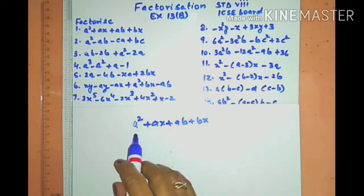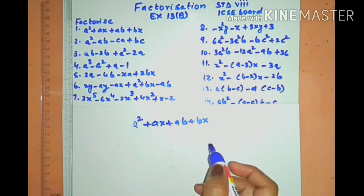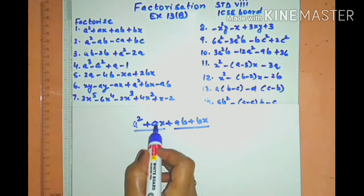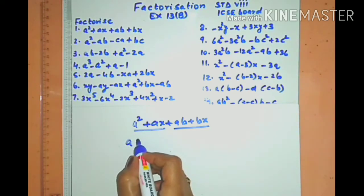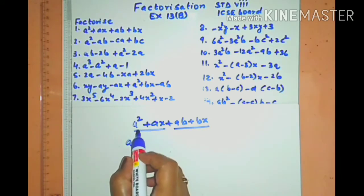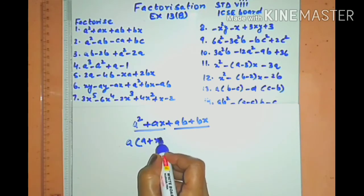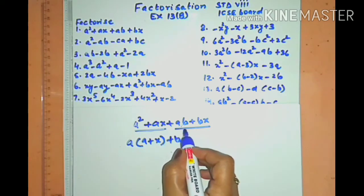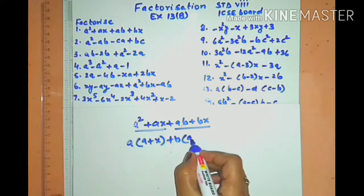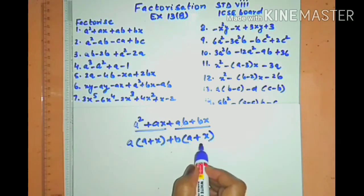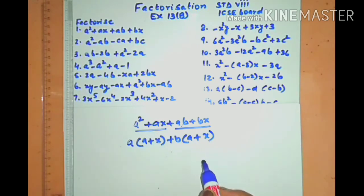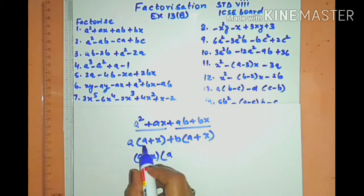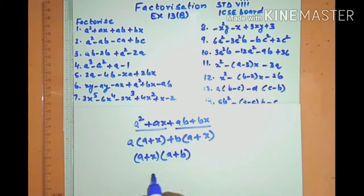Let us look at our first sum. We have a² + ax + ab + bx — four terms. We will make pairs. In the first pair, a is common, so we take a out and what remains in the bracket is a + x. In the second pair, b is common, so we take b out and what remains is a + x. Now we have a + x common to both terms, so we remove that as a common factor, leaving a + b in the bracket. That is the answer.